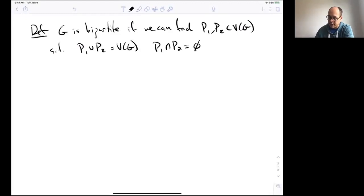We could say that such that if you have a pair of vertices V and W in PI, for I being one or two, then because they're in the same part, they can't be adjacent, or not adjacent.